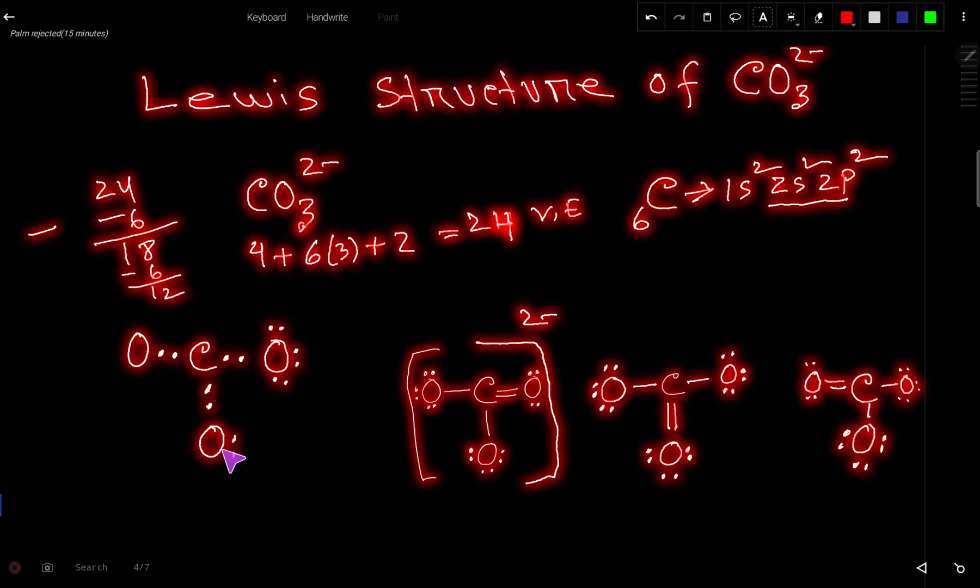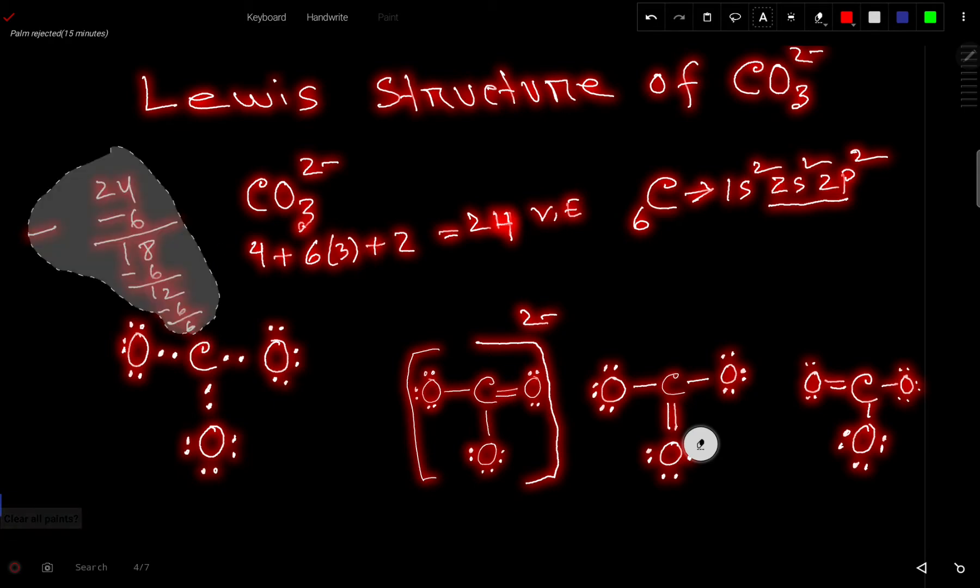This oxygen also will take 6 valence electrons, so we have now 6 valence electrons left. So this oxygen will take 6 more valence electrons. Now we have used this 6 valence electron, that is we have used all the valence electrons.